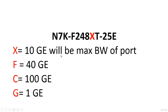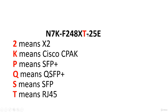T indicates the port type — T means RJ45. If it were S, that would mean SFP; P denotes SFP+; and Q means QSFP+. QSFP+ can provide 100 Gbps of wire transfer per port. SFP, SFP+, and QSFP+ are all transceivers — I'd recommend searching for the differences between these online.